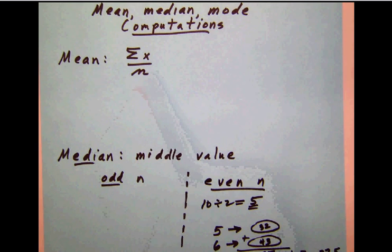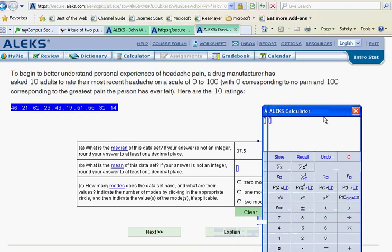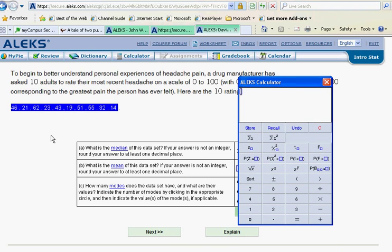Now adding those up is easy enough in ALEKS because you can use your ALEKS calculator for that. So once again, what we'll do here is grab those numbers and pull them into the ALEKS calculator. Notice the summation button. So we can merely click that, and we'll get a total of 366. So the 366 then is going to be our summation of x.